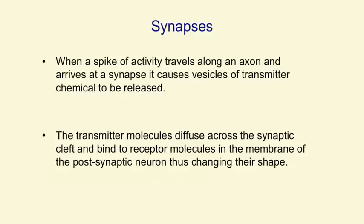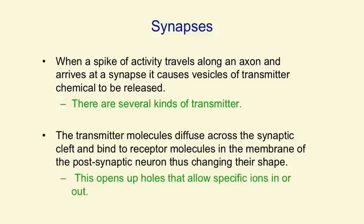Synapses themselves have interesting structure. They contain little vesicles of transmitter chemical, and when a spike arrives in the axon, it causes these vesicles to migrate to the surface and be released into the synaptic cleft. There are several different kinds of transmitter chemical — ones that implement positive weights and ones that implement negative weights. The transmitter molecules diffuse across the synaptic cleft and bind to receptor molecules in the membrane of the postsynaptic neuron, changing their shape and creating holes in the membrane. These holes allow specific ions to flow in or out of the postsynaptic neuron, changing their state of depolarisation.